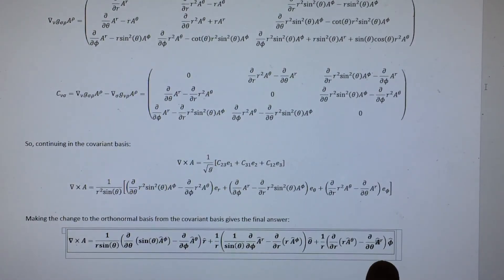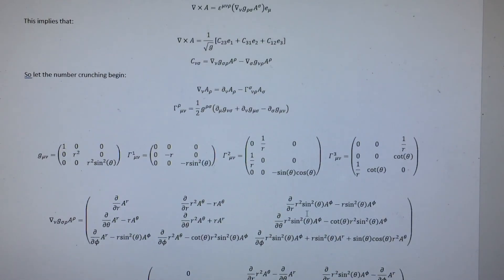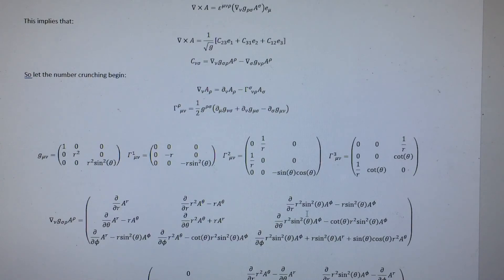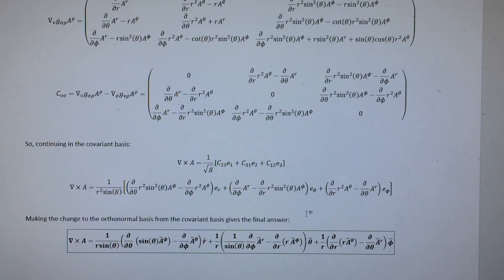The result is the standard curl of a vector in spherical coordinates. It's not quite as straightforward as you might think — you have to make sure you change bases properly, have the right type of components, and take the right kind of covariant derivative. Specifically, take the covariant derivative of the covariant version of the vector, express that in terms of the contravariant vector components, and then express it in terms of the correct basis — and it all works out.